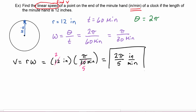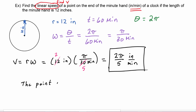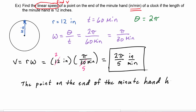Now we're ready to write our answer in the form of a sentence: 'The point on the end of the minute hand has a linear speed of 2π/5 inches per minute.'